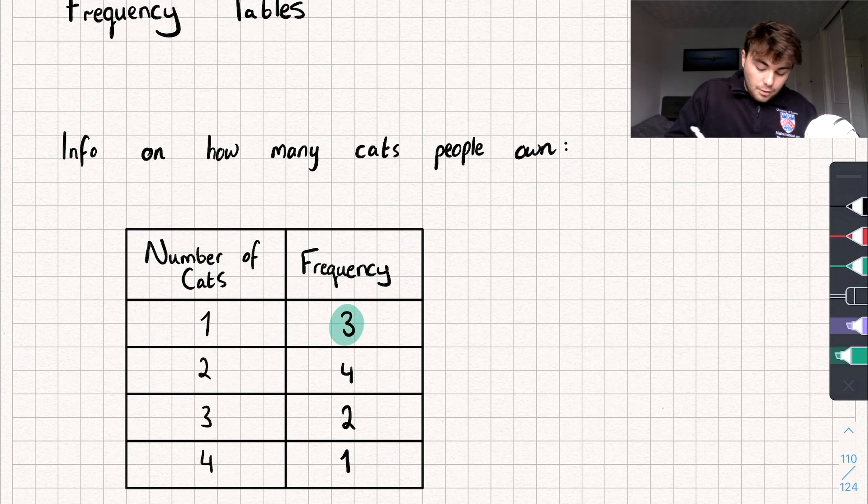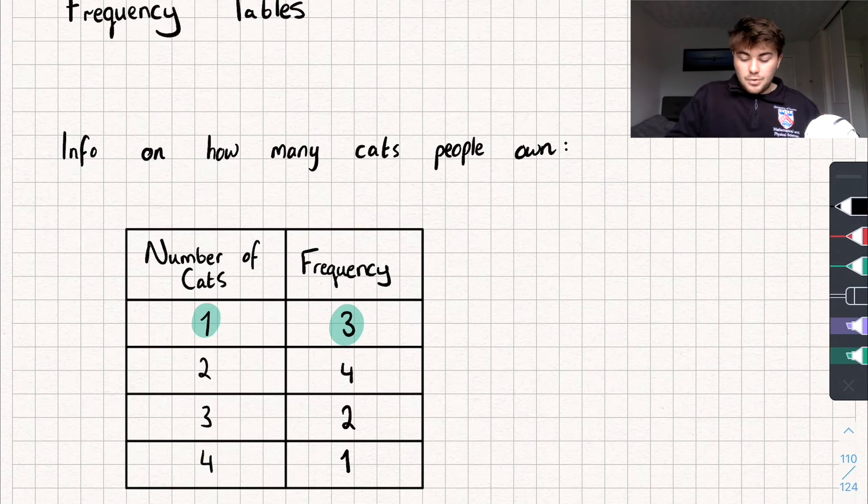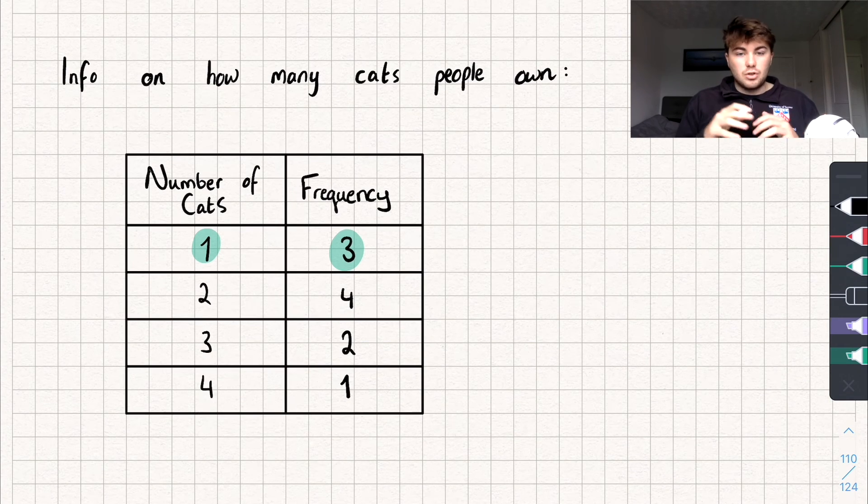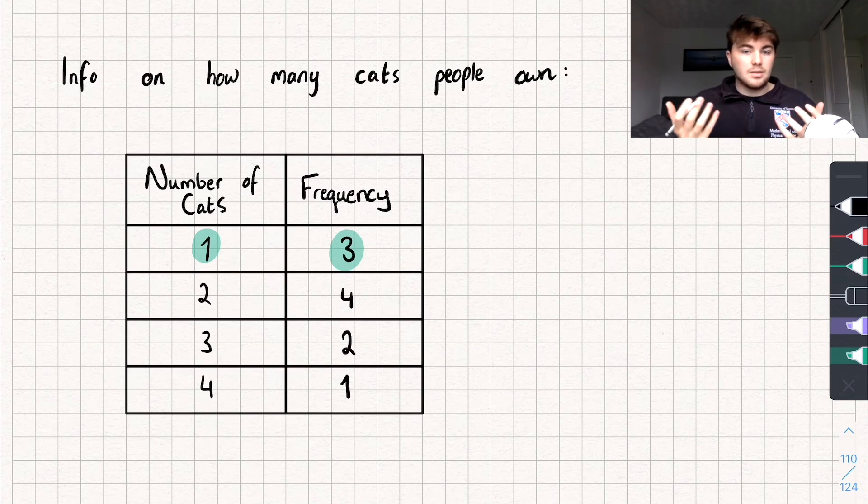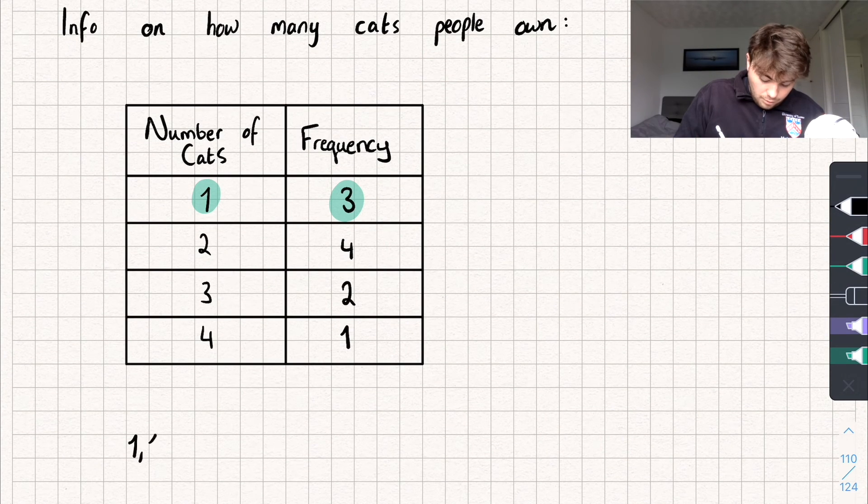For example we've got three people that have one cat. That's how we would interpret this frequency table. And so if I wanted to I could use this frequency table to write out the list of data and I would have three people with one cat, so I would have three ones.